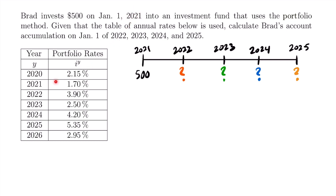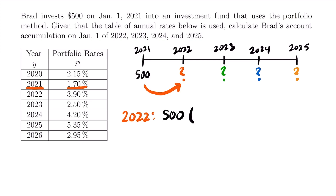If we go to our table, in 2021 the portfolio rate is 1.7%. Note that just like the problem says, this table only includes annual rates, so each of these rates apply for the entire year they correspond to. They're also all effective rates, which means we're working with compound interest. So to accumulate this $500 to the beginning of 2022, we need to use the interest rate for 2021, which is 1.7%.